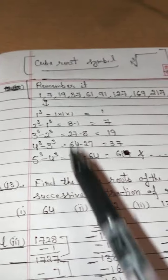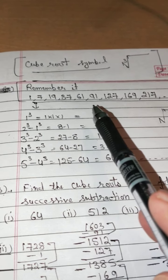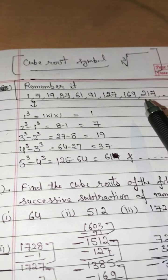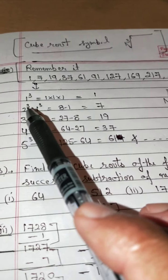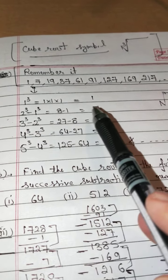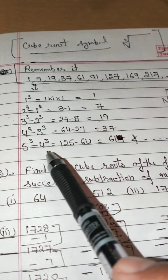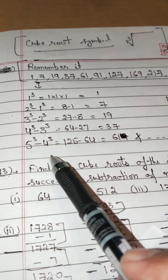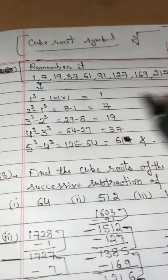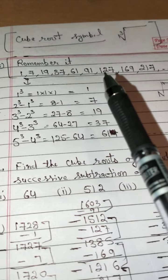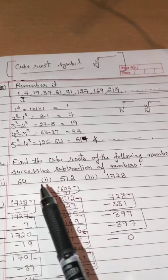Before solving the next questions, remember this important property. The numbers 1, 7, 19, 37, 61, 91, 127, 169 — all are odd numbers. Some are prime numbers, some are simply odd numbers. But this pattern comes from perfect cubes: 1³ = 1; 2³ − 1³ = 7; 3³ − 2³ = 19; 4³ − 3³ = 37; 5³ − 4³ = 61; 6³ − 5³ = 91; 7³ − 6³ = 127 — and so on. These are the differences of two consecutive cubes.